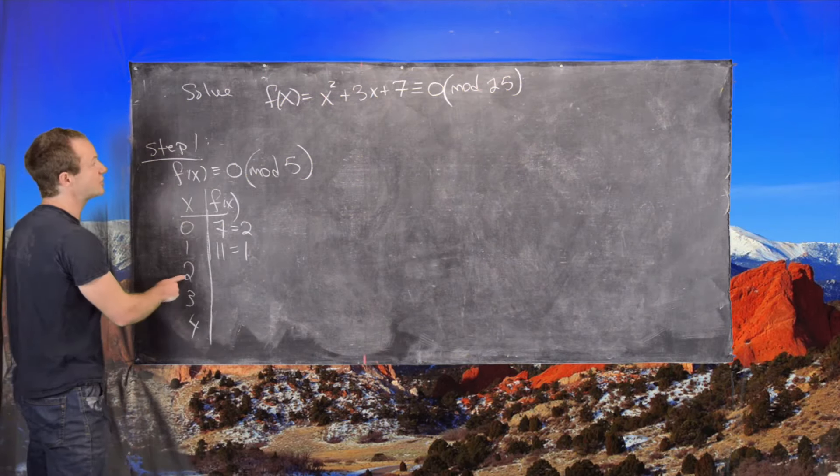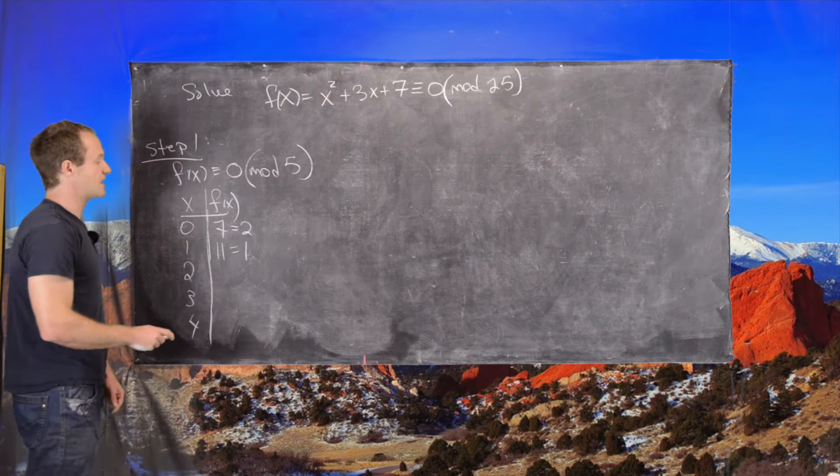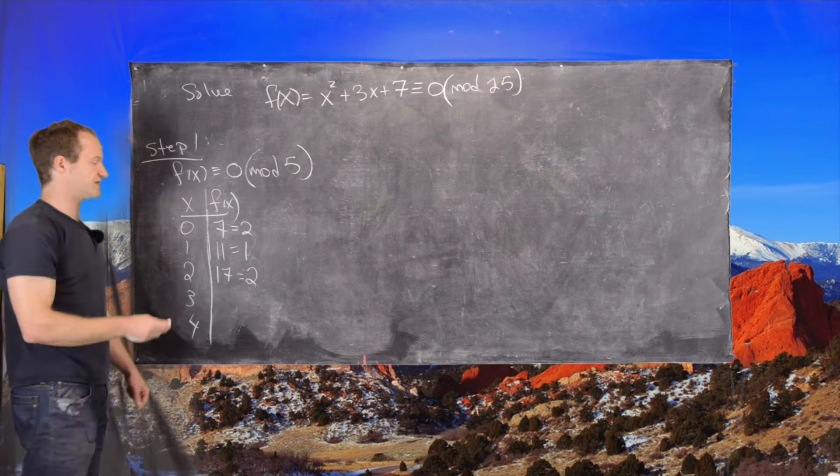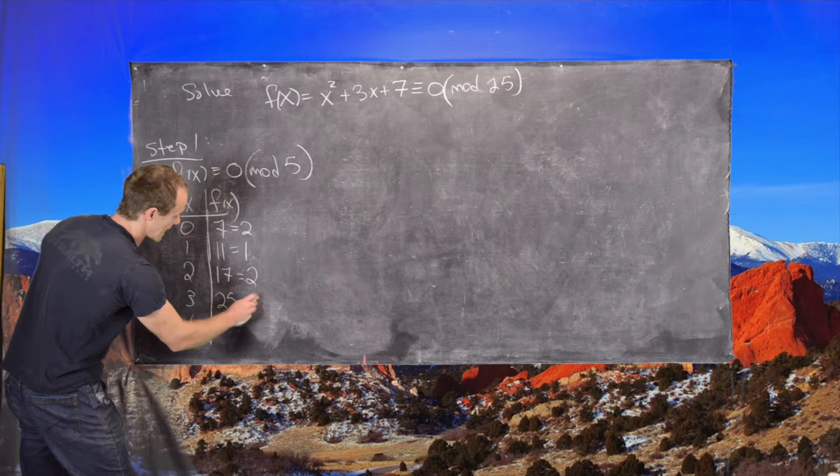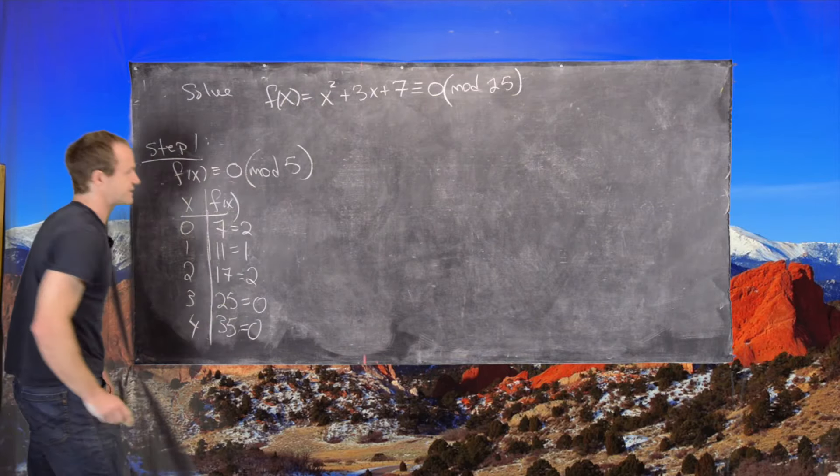If we plug in 2, we'll get 4 plus 6 is 10, plus 7 is 17, which is equal to 2, which is again not equal to 0. If we plug in 3, what we get is 25, which is 0. And if we plug in 4, we get 35, which is also 0.